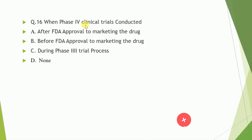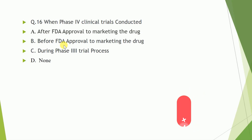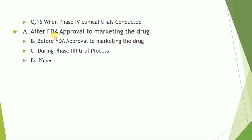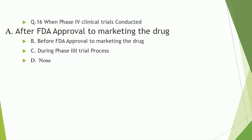Question number sixteen: when is phase four clinical trial conducted? Options are A) after FDA approval to marketing the drug, B) before FDA approval, C) during phase three trial process, D) none of these. The correct answer is after FDA approval to marketing the drug.